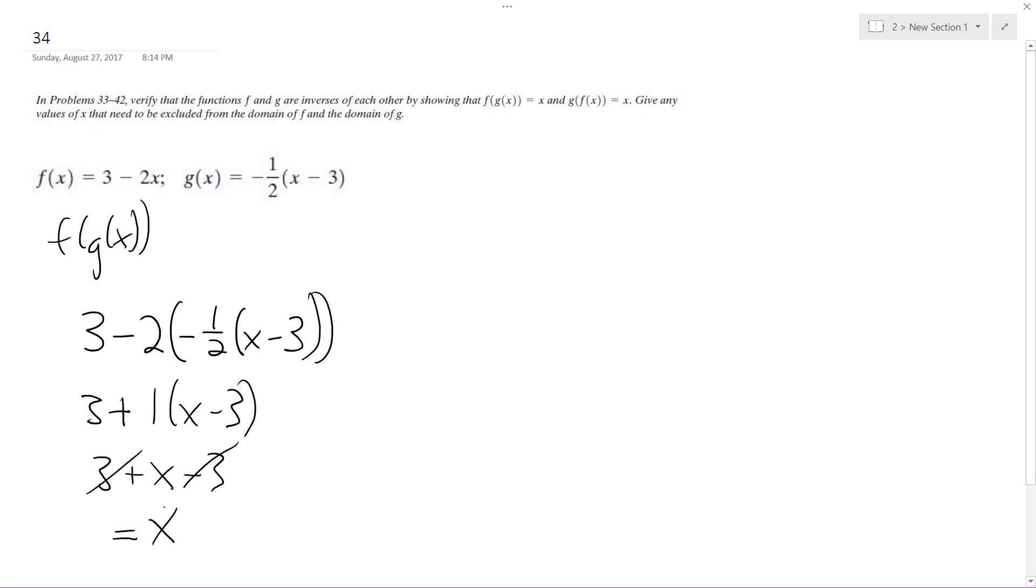So that's off to a good start. Now I'm going to do g of f of x, so I get negative 1 half, and then 3 minus 2x.